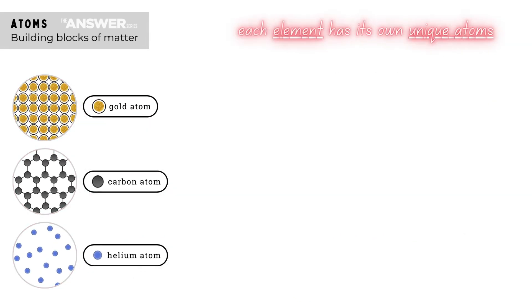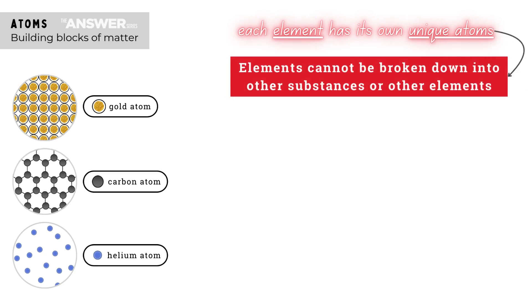And this property makes elements pure substances because they only contain one kind of atom and they cannot be broken down into other substances or other elements by chemical reactions. There's physically nothing else in them to break them into.